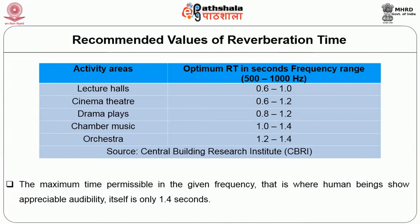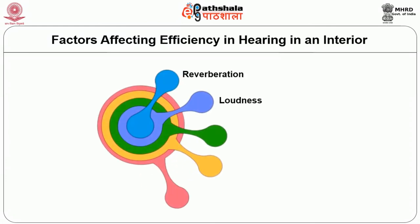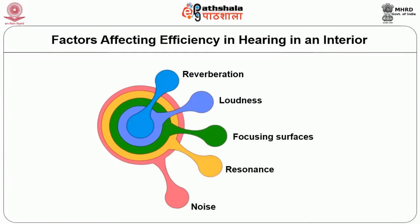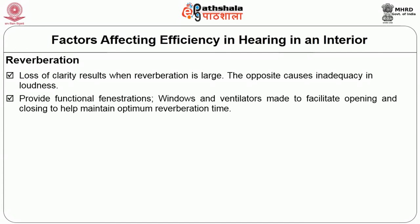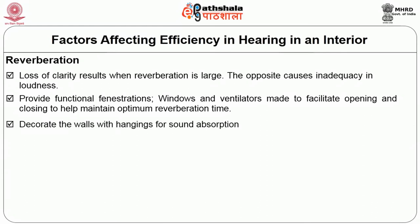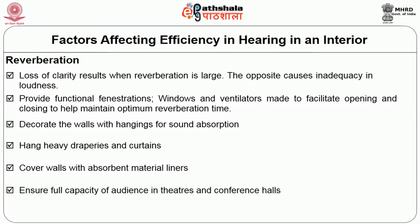All these factors have to be considered in designing space. Factors affecting efficiency in hearing in an interior are reverberation, loudness, focusing surfaces, resonance, and noise. The first factor is reverberation — loss of clarity results when reverberation is large; the opposite causes inadequacy in loudness. To control this: provide functional fenestrations — windows and ventilators — made to facilitate opening and closing to help maintain optimum reverberation time; decorate walls with hangings for sound absorption; hang heavy draperies and curtains; cover walls with absorption material liners; ensure full capacity of audience in theatres and conference halls; and use floor coverings, especially carpets or action rugs.